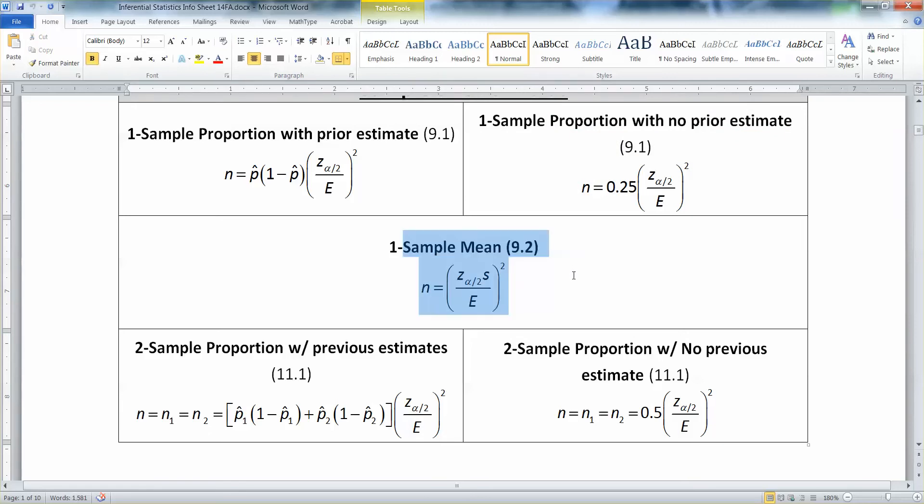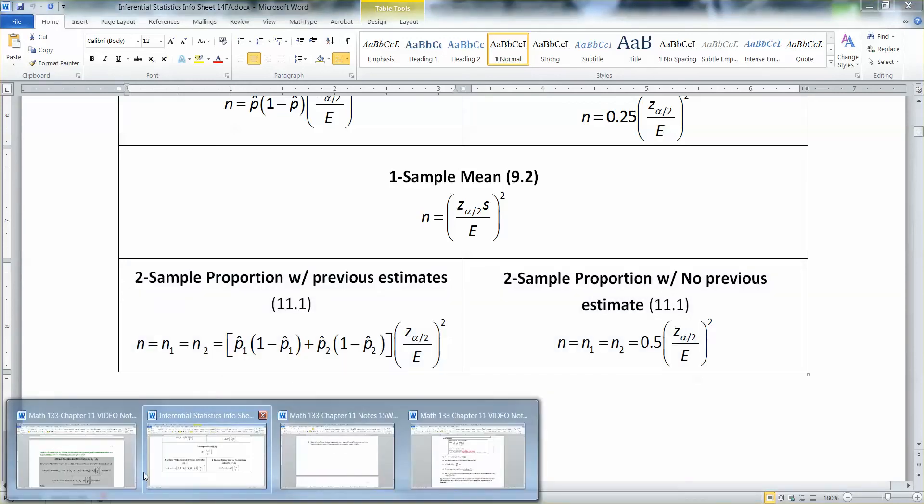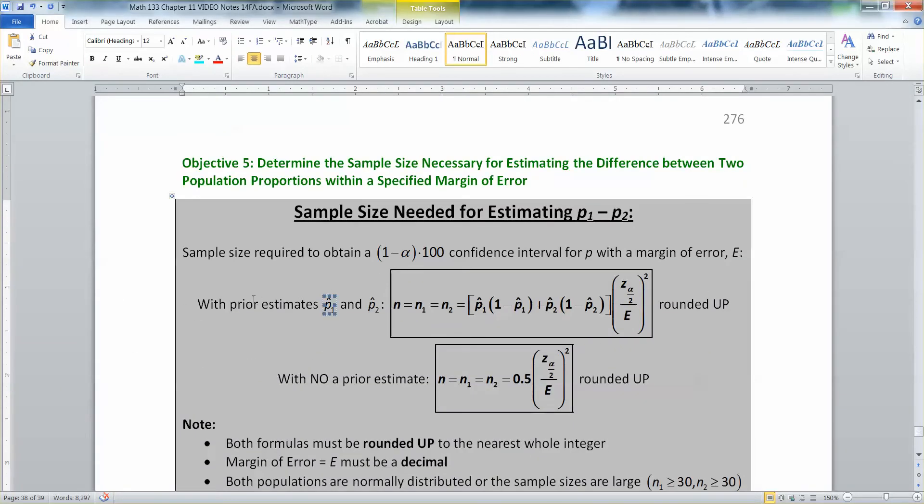So these two are proportions. Now we're going to work on what if I wanted the difference between men and women? What if I wanted the difference between African Americans and Latinos? What if I want to know the difference between one group and another group and I want to call them up and ask them, then I'm going to use one of these two formulas. The one on the left, which is the first one on our page, is if you have prior estimates. See that right there? So if you have some old data set, some old study, some old something or other, where you have prior information.